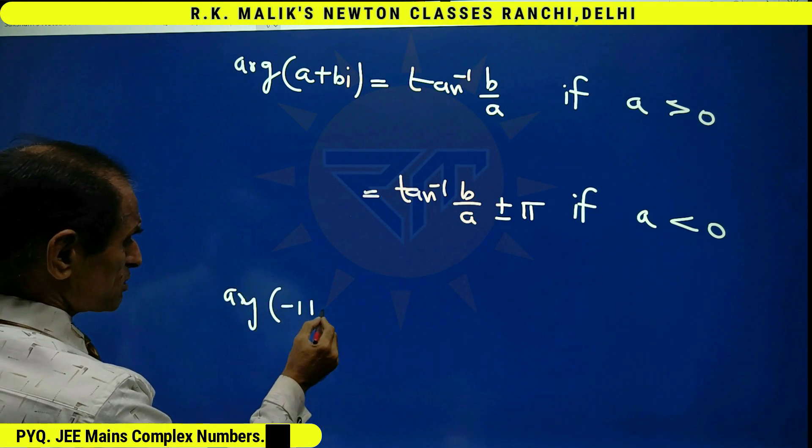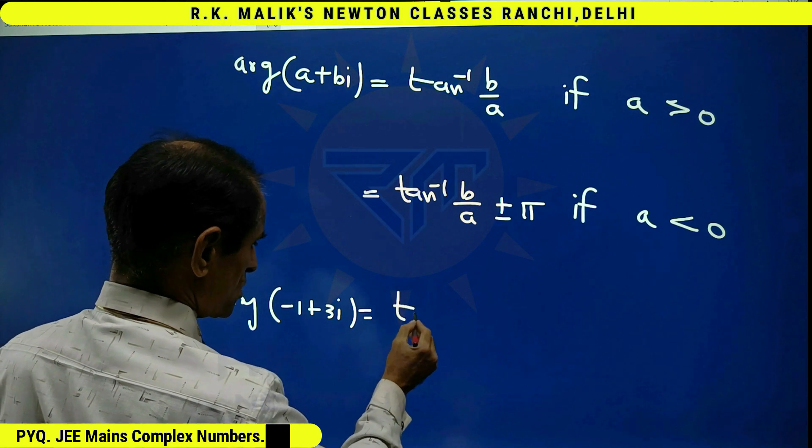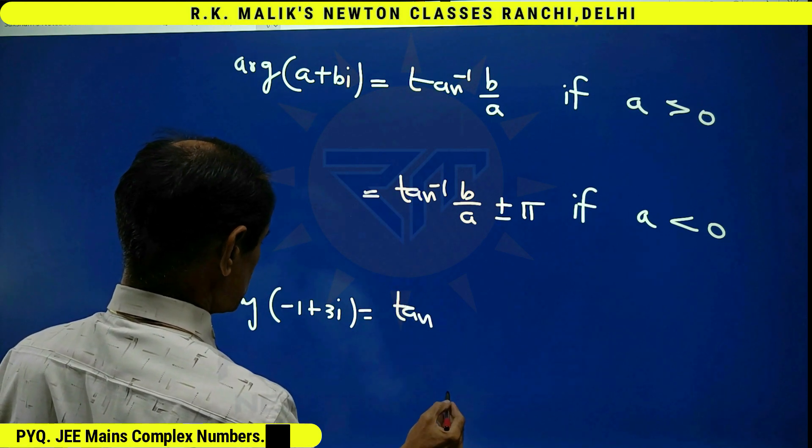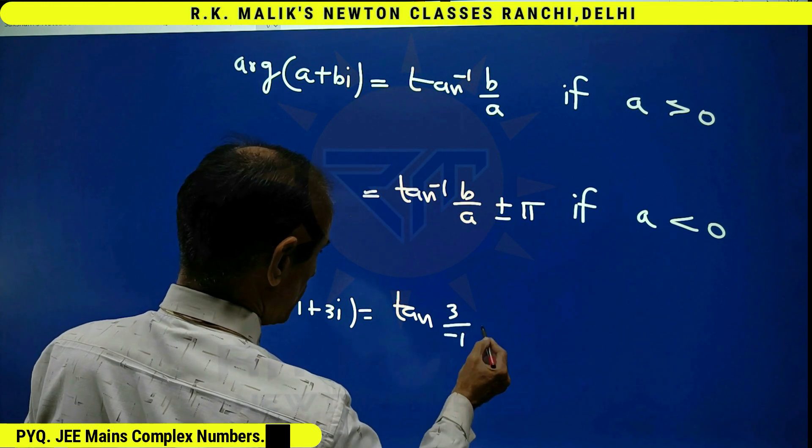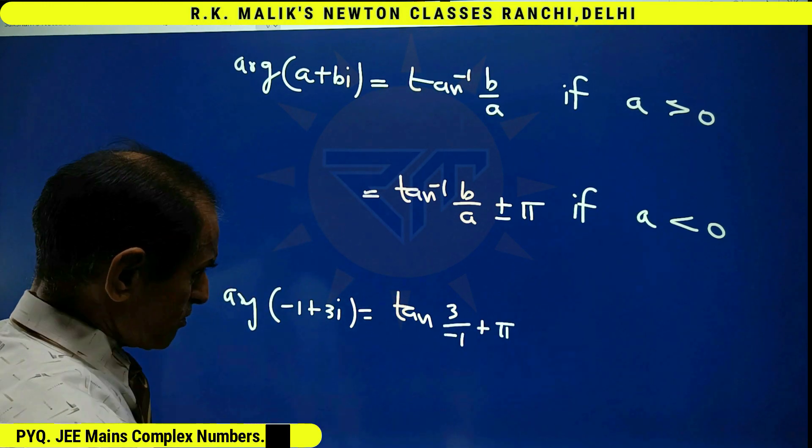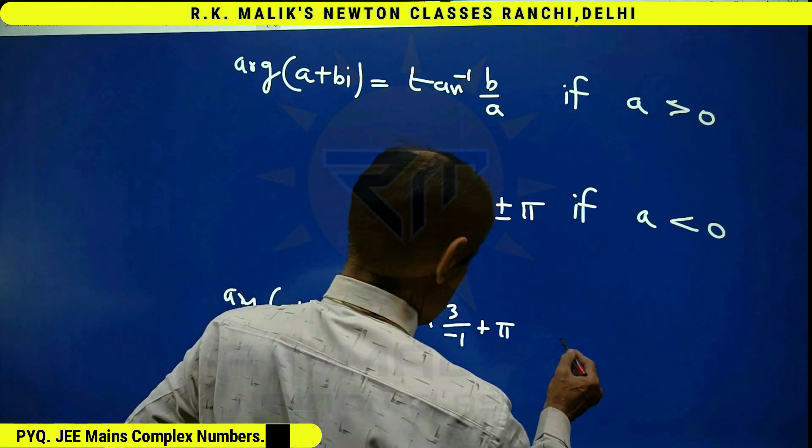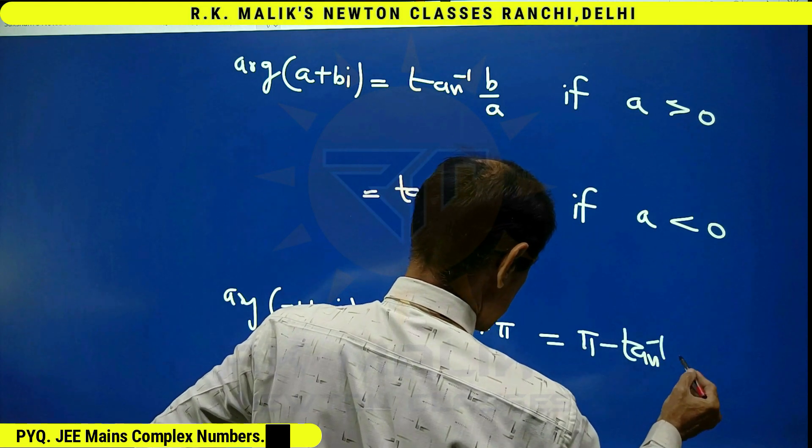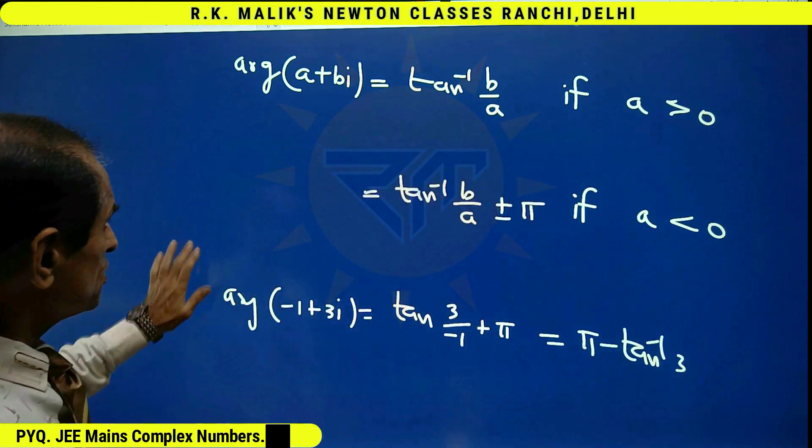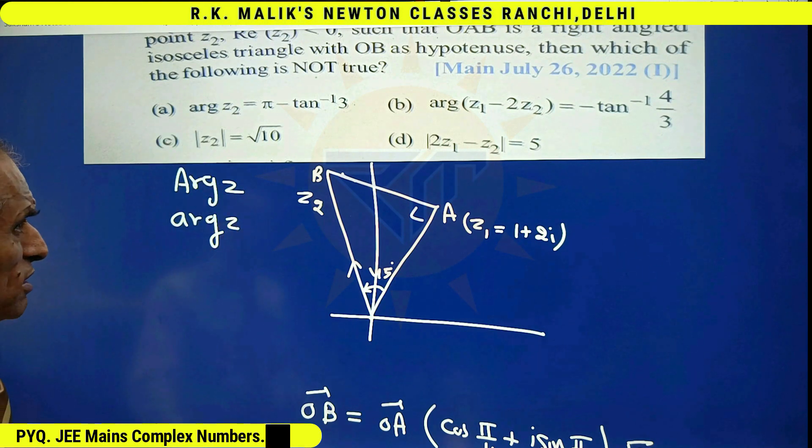Hence, keeping that formula in mind, argument of -1 plus 3i becomes tan inverse (3/-1) plus π, because b is positive here. That is, I get π minus tan inverse 3. Hence, the information in choice A is correct.